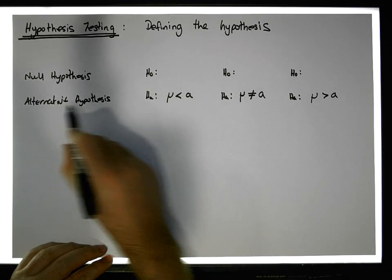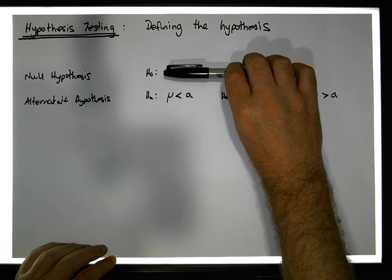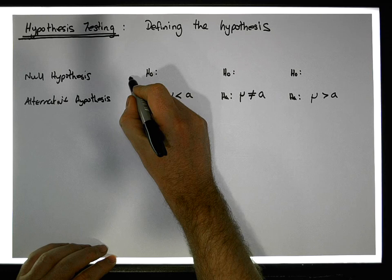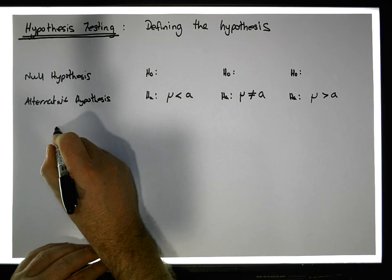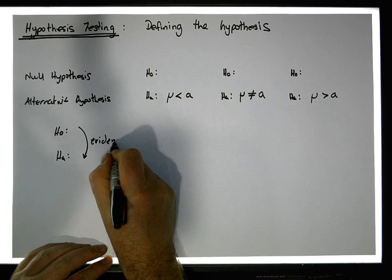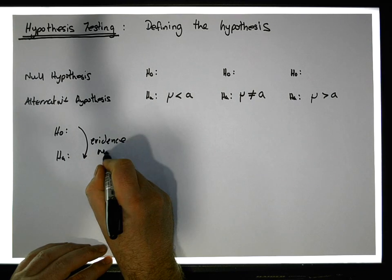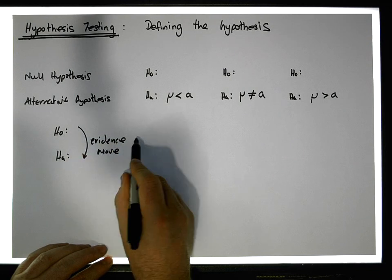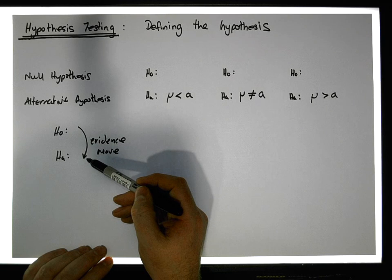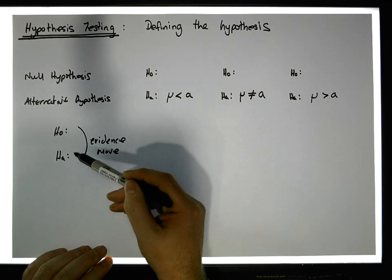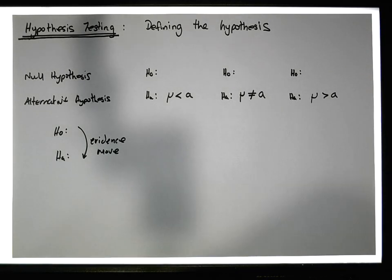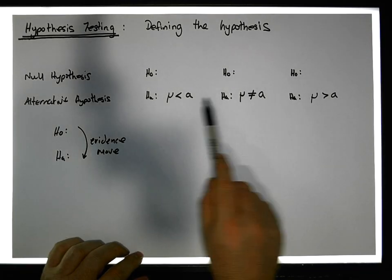It's always the alternative we're testing, because we assume the null to be true. It's only based on the evidence that we can move from H0 to HA. The evidence allows us to move from what we assume to be true to the alternative. If the evidence doesn't allow us to move, there's no evidence in support of the alternative — but that doesn't make the null true; it just means there's no evidence to support the alternative.